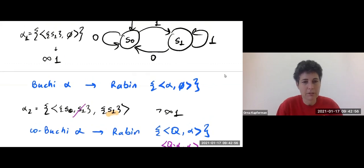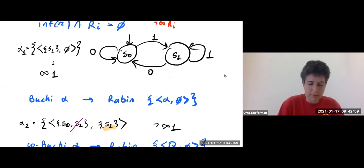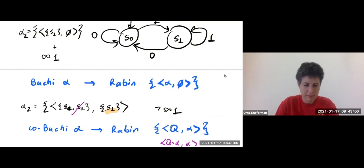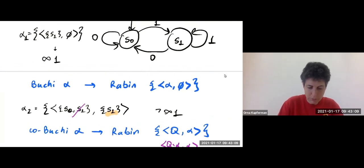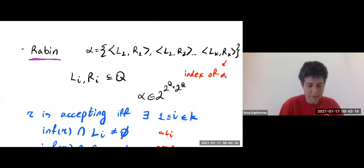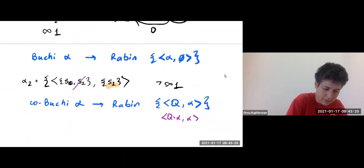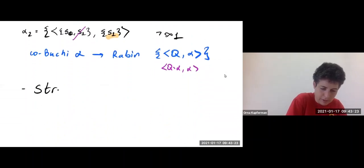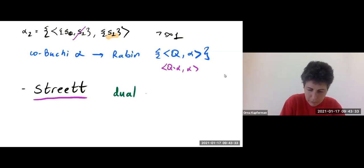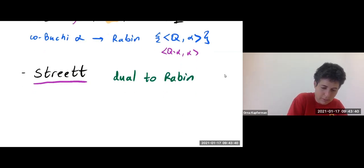So Rabin is at least as strong as Büchi and co-Büchi — stronger, because we already have an example of a language that can be recognized by Rabin but not by Büchi and co-Büchi. Now the second condition, Streett, dualizes Rabin, the same way co-Büchi dualizes Büchi.